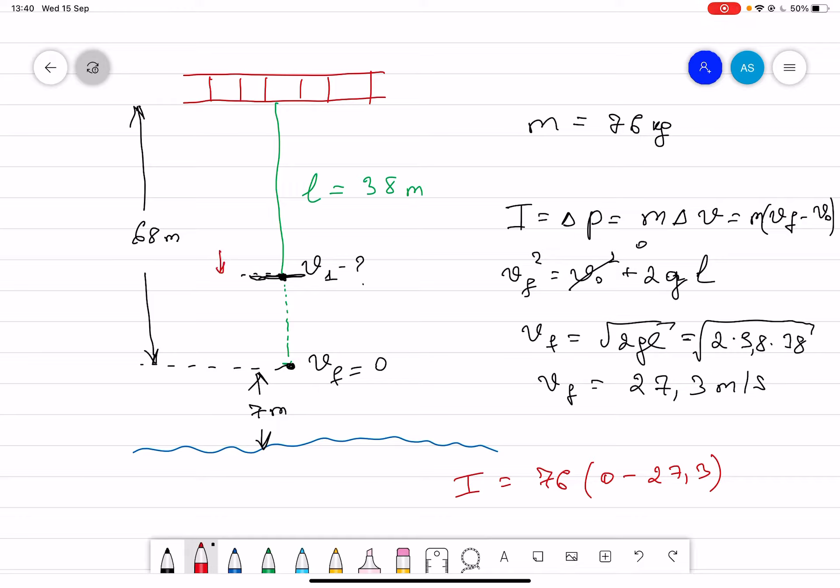It should be a negative velocity, and negative times negative, I think finally you should get just the positive impulse. Because impulse is a scalar product, you should get only plus number. 76 multiplied by 27.3 which gives you impulse of 2074 kilogram meter per second.